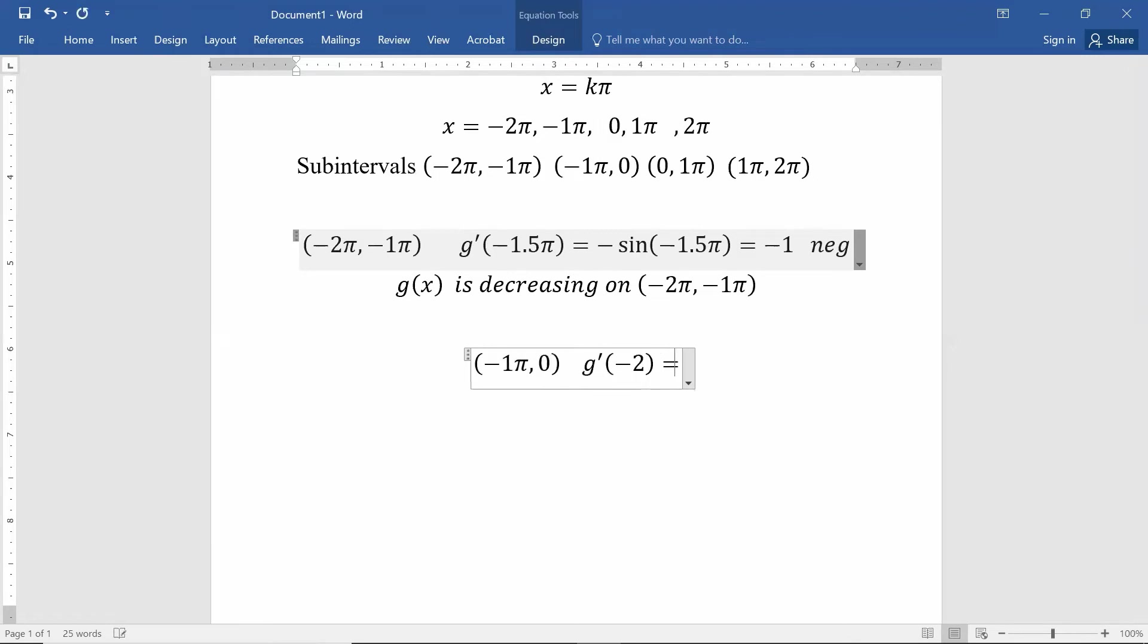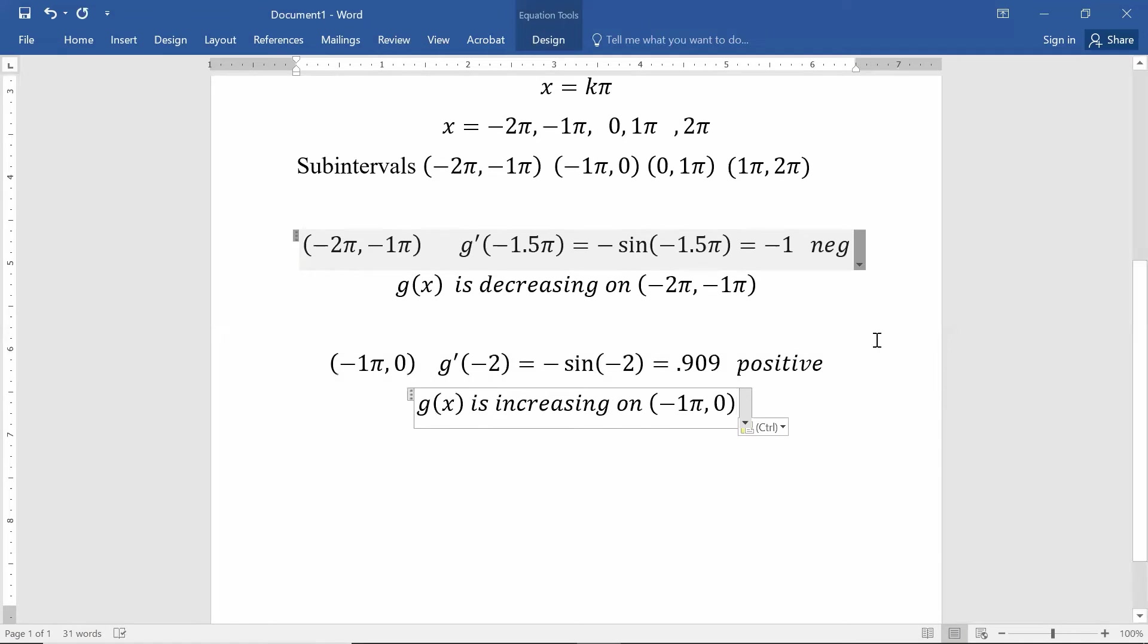Negative sine of negative 2. Type that into my calculator. I got a positive 0.909. And the only thing I care about is the fact that that's positive. So my function g of x, which is cosine, is increasing on that interval, the interval from negative 1π to 0.